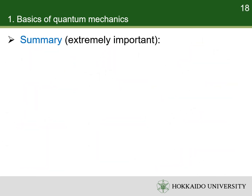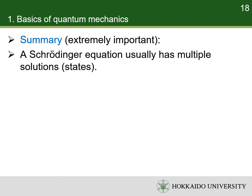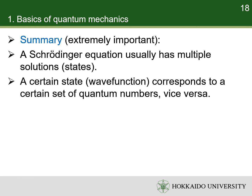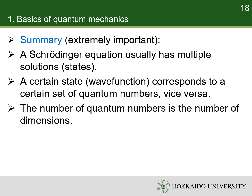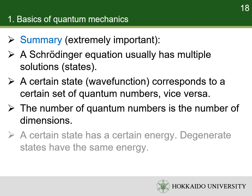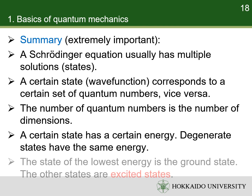Here I show a summary of the Schrödinger equation. A Schrödinger equation usually has multiple solutions corresponding to different states. A certain state corresponds to a certain set of values of the quantum numbers, and vice versa. The number of quantum numbers equals the number of dimensions of the space. A certain state has a certain energy. Degenerate states have the same energy. The state of the lowest energy is the ground state, and all other states are excited states.